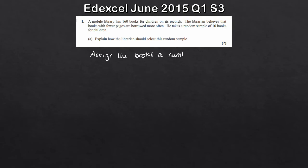Then we're going to use random numbers to select the 10 books. And then we use random numbers to select our 10 books. And there you have it. So that's two marks, believe it or not. Literally it's two or three lines, not too much work.